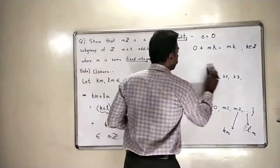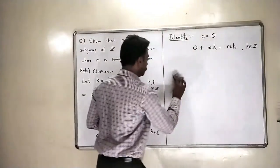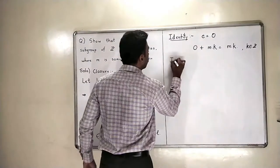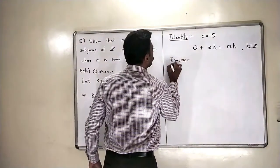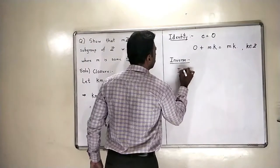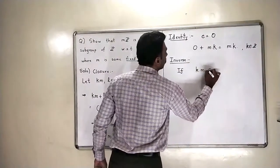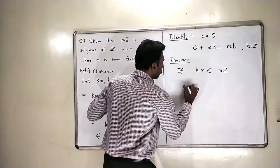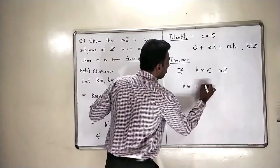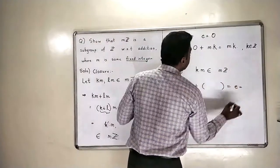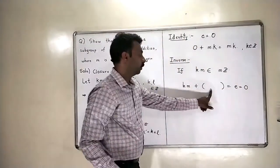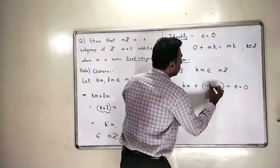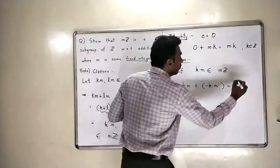The third is inverse with respect to addition. So, the inverse, if you take any element km in the set mZ, then what should I add to this km so that I will get identity which is 0 back? So, what should I add here? I should obviously add here minus k multiplied by m. Right? So, k is an integer.